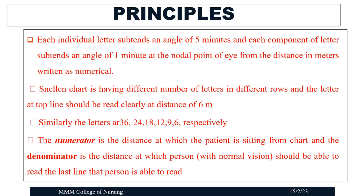In the measurement of a Snellen's chart, the numerator is the distance at which the patient is sitting from the chart, and the denominator is the distance at which a normal person should be able to read the last line that the patient is able to read.